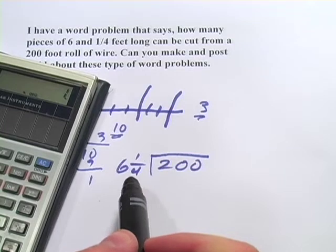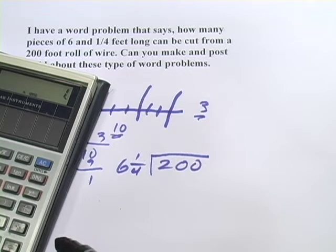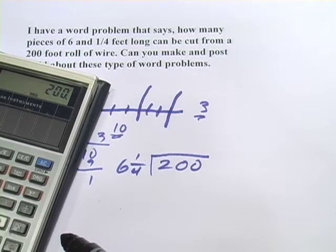If you don't know that, you would just punch in one divided by four on your calculator. You'd get .25. So we're going to take 200, and we're going to divide it by six and one quarter, 6.25, and we get 32.